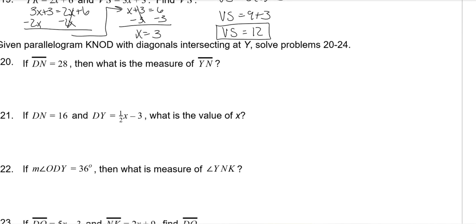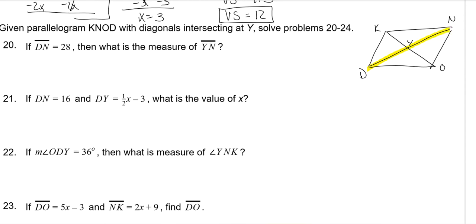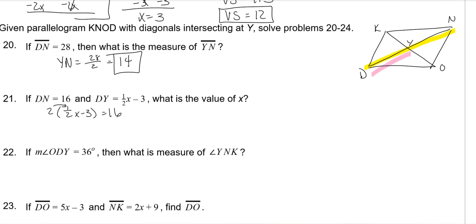Given parallelogram KNOD with diagonals intersecting at Y: DN is 28, so YN will be half of it—14. For the next part, DN is 16 and DY is given as an expression. We double DY to equal DN: 2 times (one half X minus 3) equals 16. Distribute: X minus 6 equals 16. Add 6 to both sides, and X is 22.